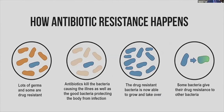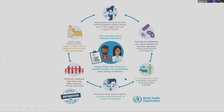You can see that there are lots of germs shown here. One has just developed antibiotic resistance and is being multiplied to many. Finally, some bacteria give their drug resistance to other bacteria. There are a few steps showing how antibiotic usage can result in antibiotic resistance, which can be transferred from one organism to another and spread through the population from one person to another.